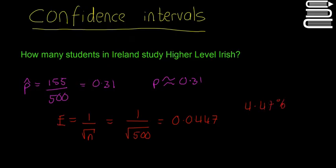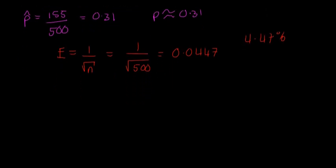How does that help us construct a confidence interval? This error here, 0.0447, could be plus or it could be minus. It could be 0.31 plus this or 0.31 minus this.